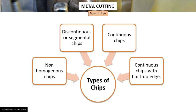In a metal cutting operation, which is carried out in a machine shop, chips are separated from the workpiece to impart the required size and shape to the workpiece. The type of chip formed is basically a function of the work material and the cutting conditions.